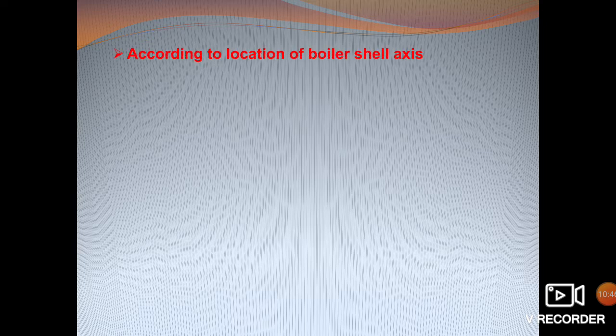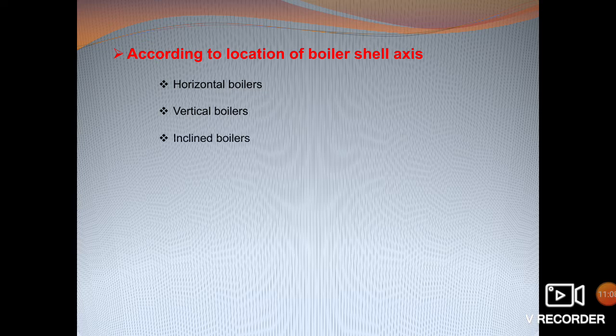Boilers can also be classified based on various parameters. According to the location of the boiler shell axis: horizontal boilers, where the axis of the boiler shell is horizontal; vertical boilers, where the axis is vertical; and inclined boilers, where the axis of the boiler is inclined.